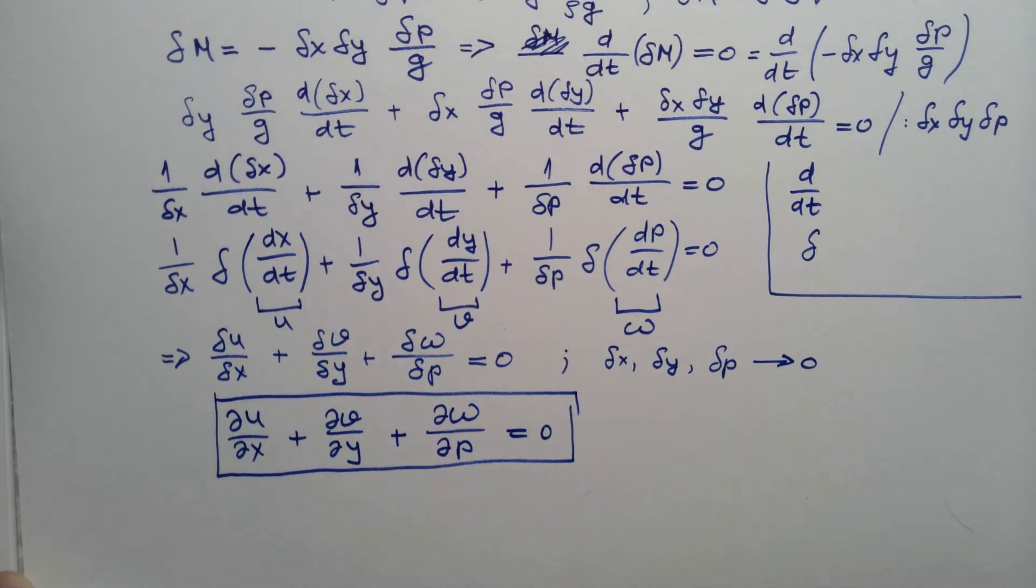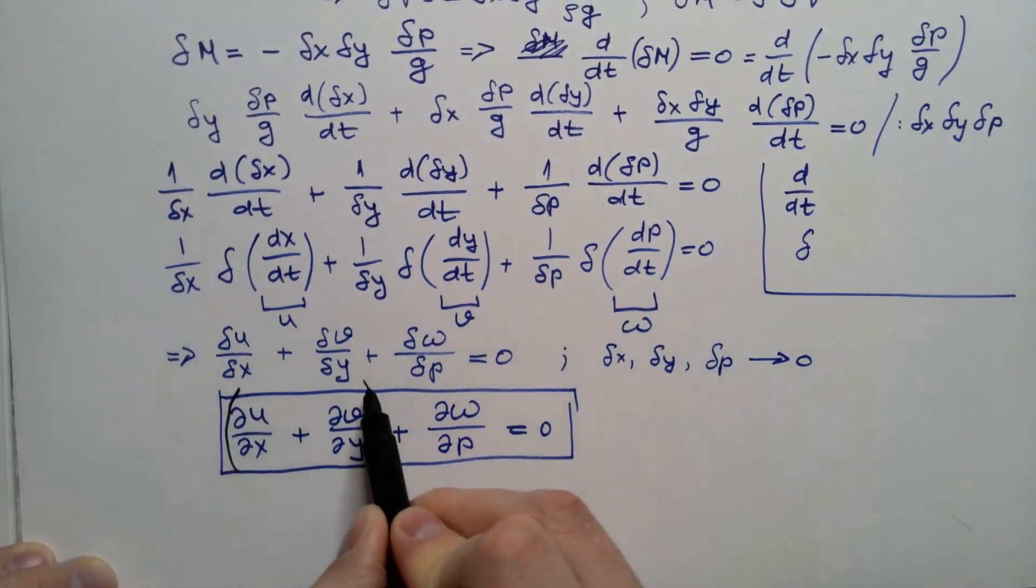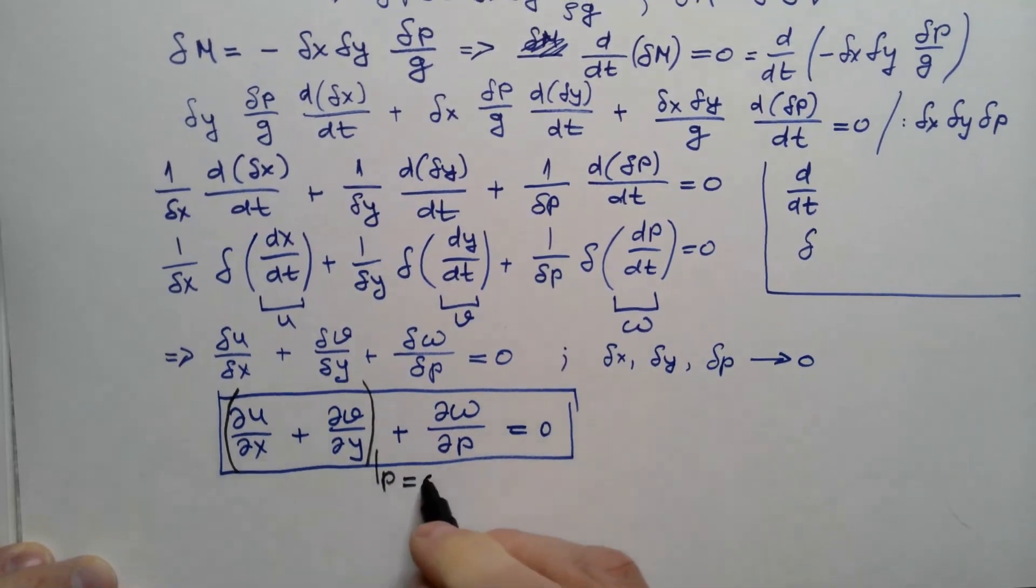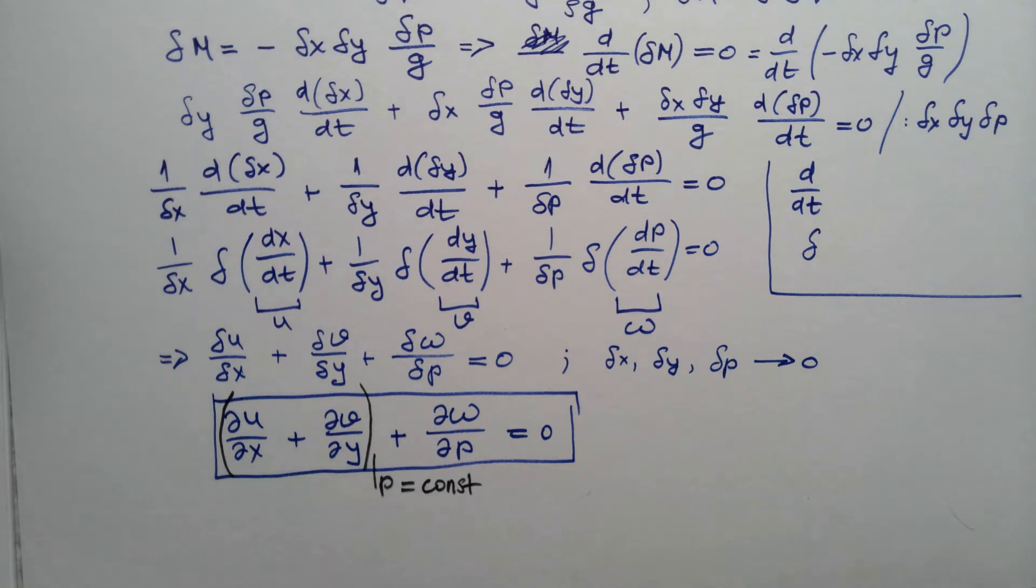Where you have to keep in mind that these are now at p equal constant. Namely, divergence is evaluated on the isobaric surfaces.